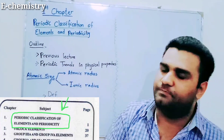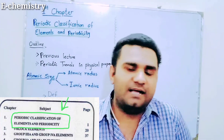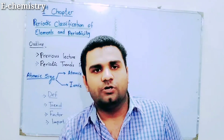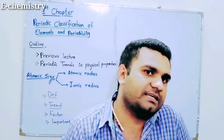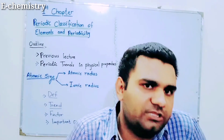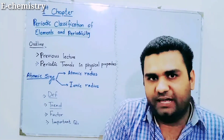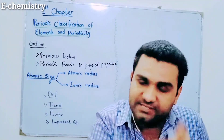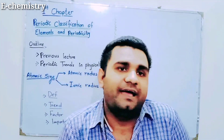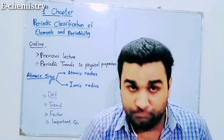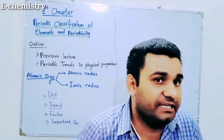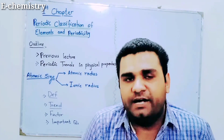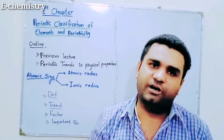Classification of elements and periodicity — our third lecture starts today. In the previous lectures, we covered the periodic table introduction and the contributions of scientists: Al-Razi, Dobereiner, Newlands, Mendeleev, and Moseley. Moseley discovered the atomic number in 1913–1914, and elements were arranged by atomic number to give us the modern periodic table.